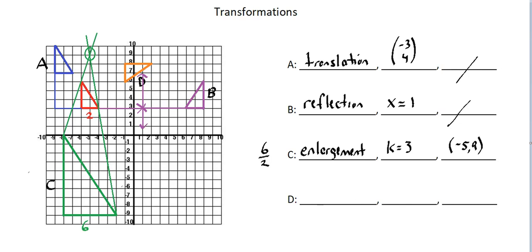Now let's move on to D. D represents a turn of the object, so we're dealing with a rotation. We want to identify the degrees of rotation as well as the center of rotation. With rotations, we're expecting either a quarter turn or a half turn — we can observe this is a quarter turn, in other words 90 degrees. Looking at the object, the top vertex, which is the smallest angle, is now in the position of the far right vertex of the image triangle, so we're turning to the right. This is a 90 degrees clockwise rotation.